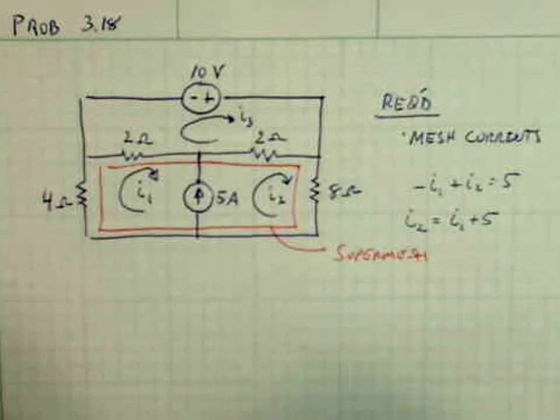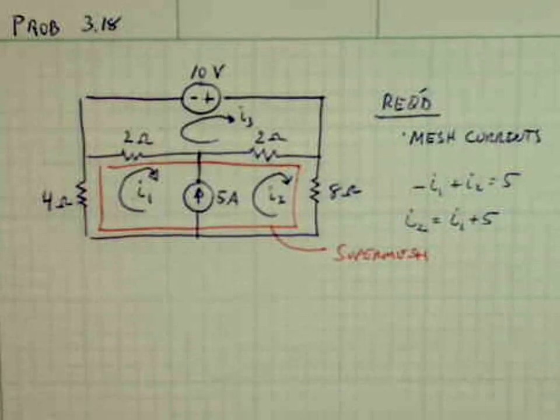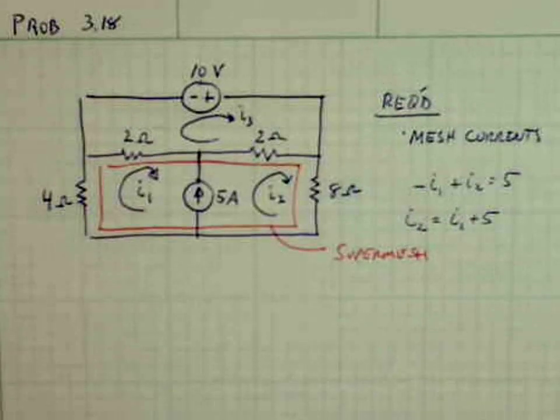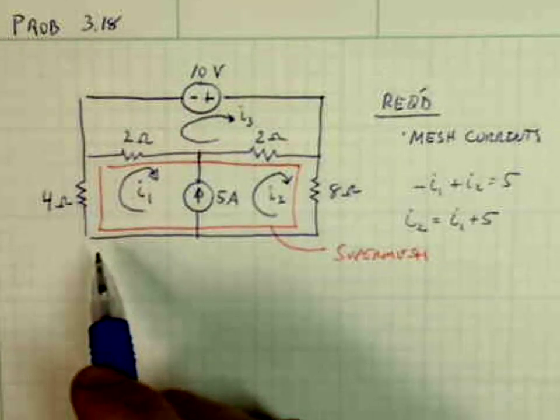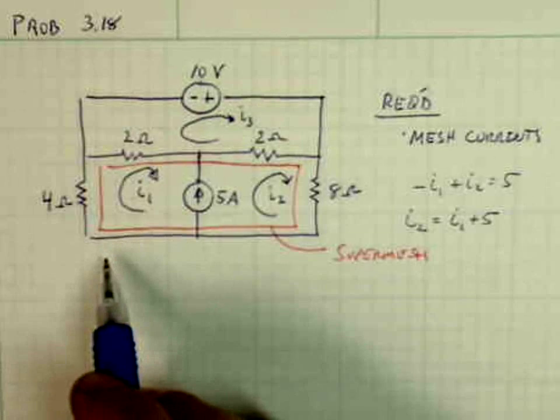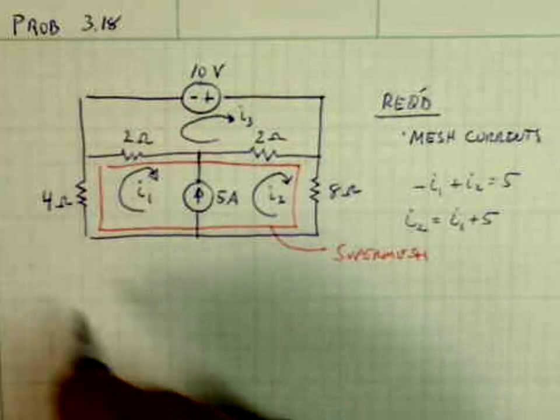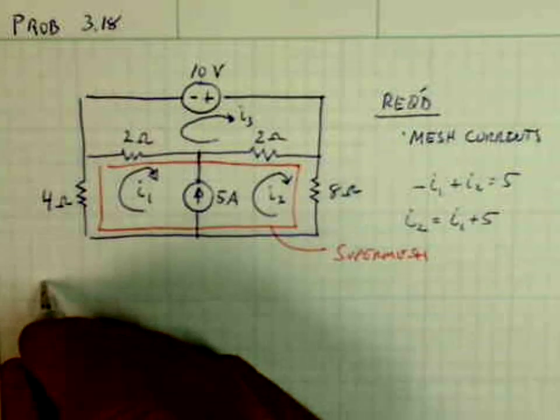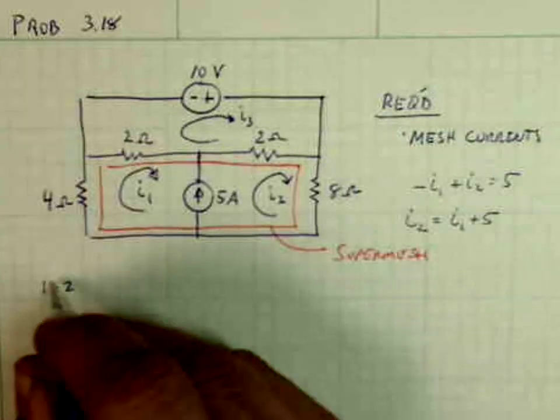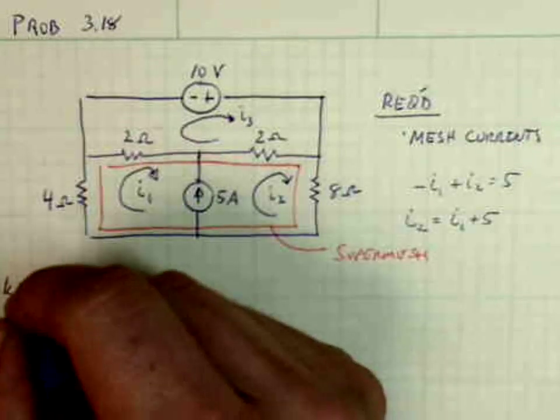Okay, all right, so we will now take KVL around the super mesh. So level 2, KVL.